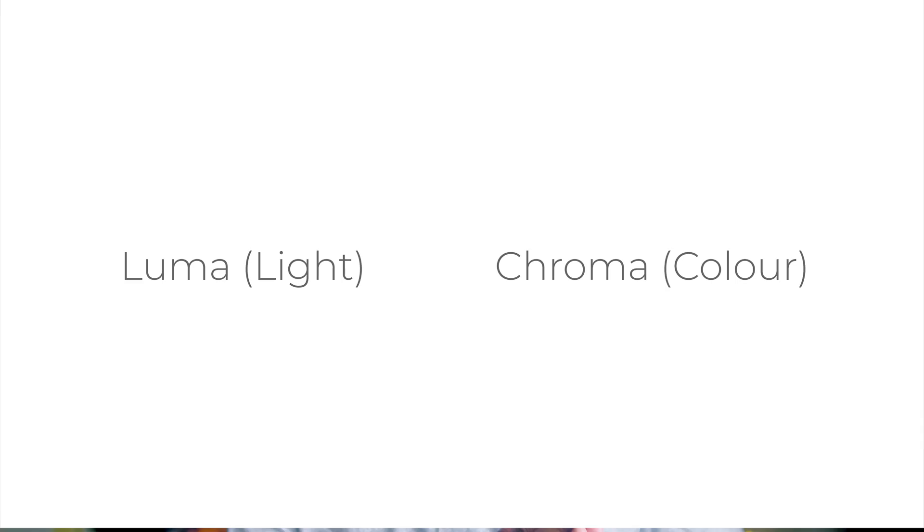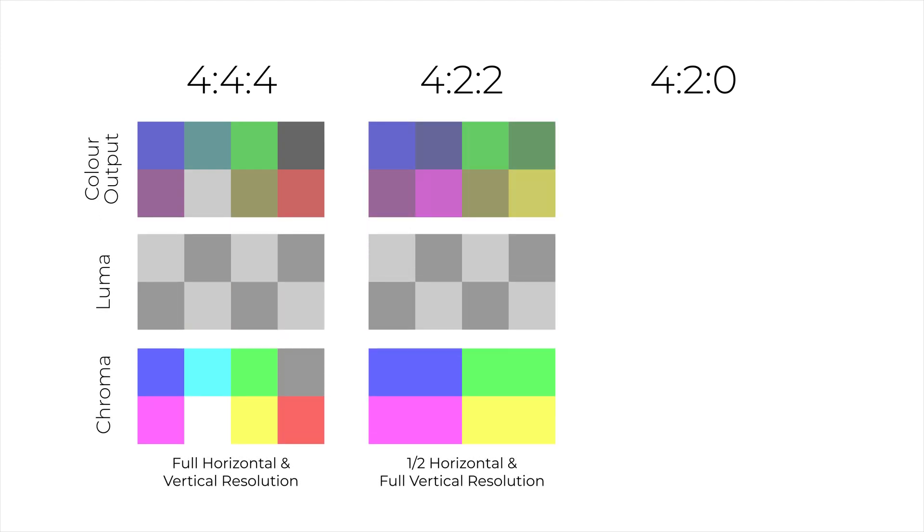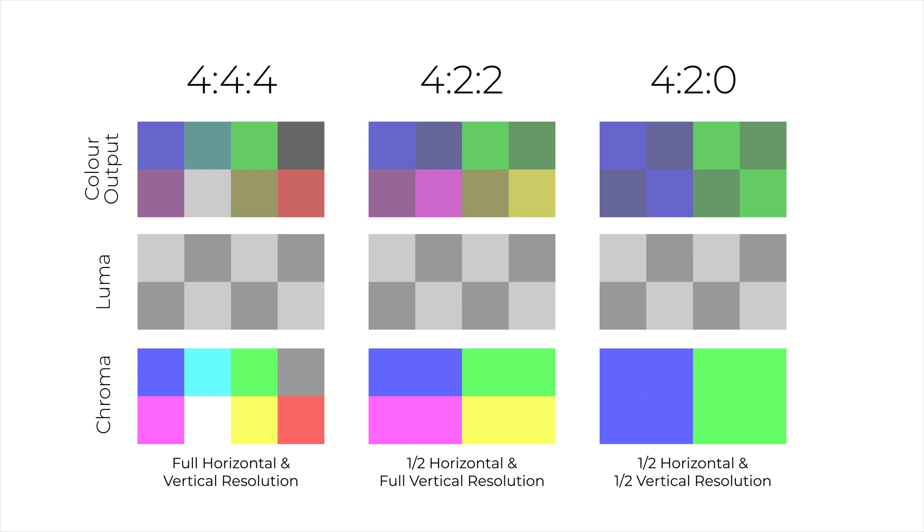Digital video stores information as separate luma and chroma components. This separation allows for compression, reducing the amount of data needed. Color sampling ratios like 4:4:4, 4:2:2, and 4:2:0 represent different levels of chroma compression. 4:4:4 is uncompressed, 4:2:2 compresses chroma by half horizontally, and 4:2:0 compresses both horizontally and vertically. Most DSLRs shoot in 4:2:0, which significantly reduces the color information. This compression, combined with lower bit depth, limits the quality and flexibility of your footage.